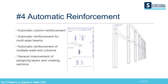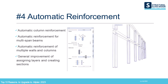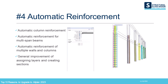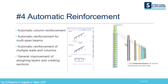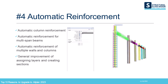Number 4. Automatic reinforcement is no longer a dream with Allplan 2023. You can now instantly 3D reinforce multiple columns and walls at the same time, and even multi-span beams. All data is parametric and the number of bars, diameters, quality and spacing can be easily changed at any point.